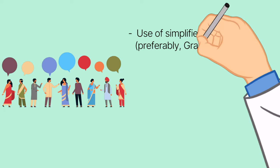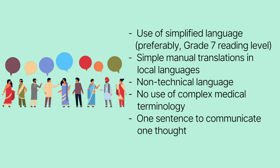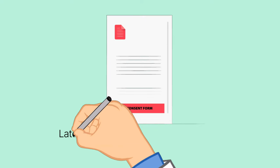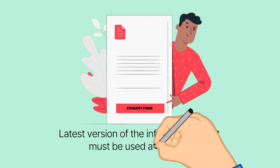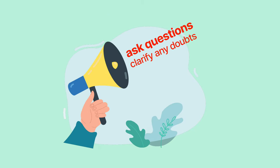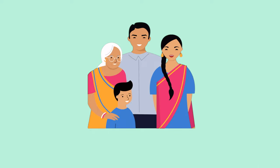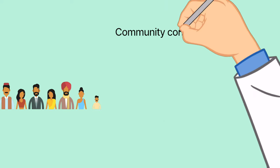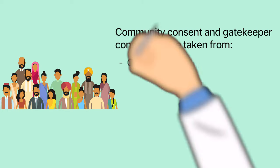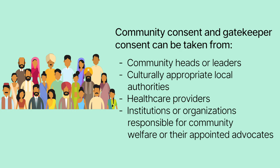There are other important aspects to consider while seeking informed consent. The researcher should use the latest version of the consent documents. Participants are encouraged to ask questions and clarify doubts, and all questions must be answered truthfully. Participants can withdraw from the study at any time without losing benefits. Community engagement does not replace individual informed consent; individual consent must still be obtained in addition to community permission.